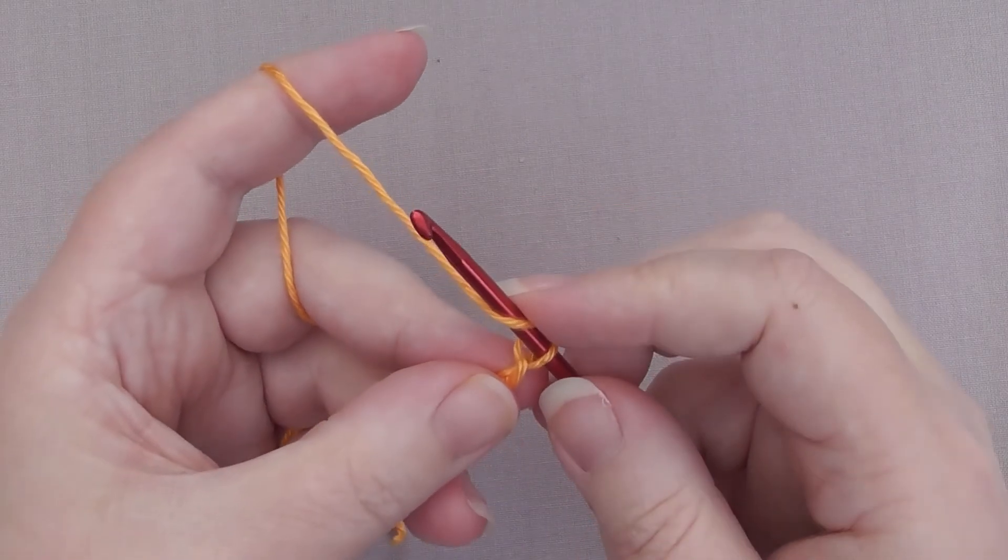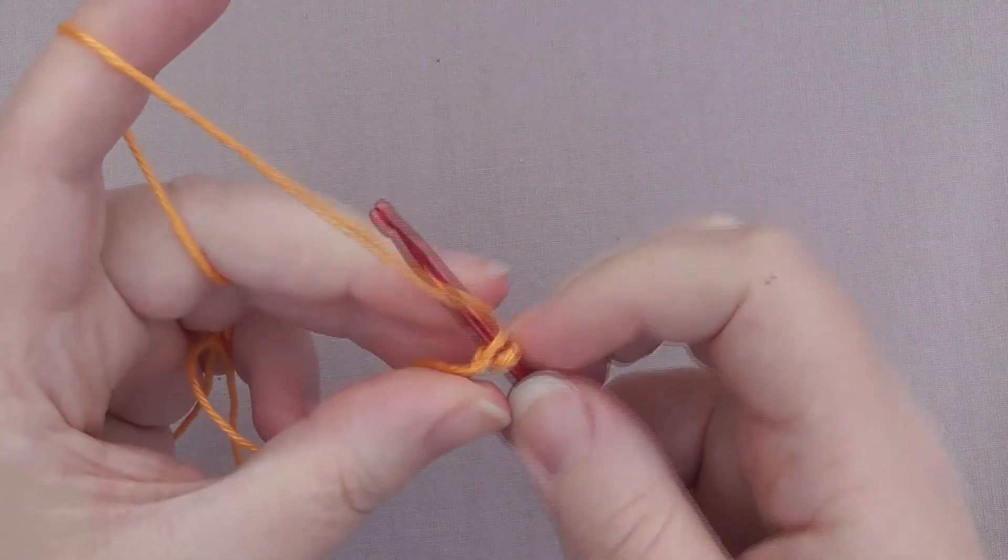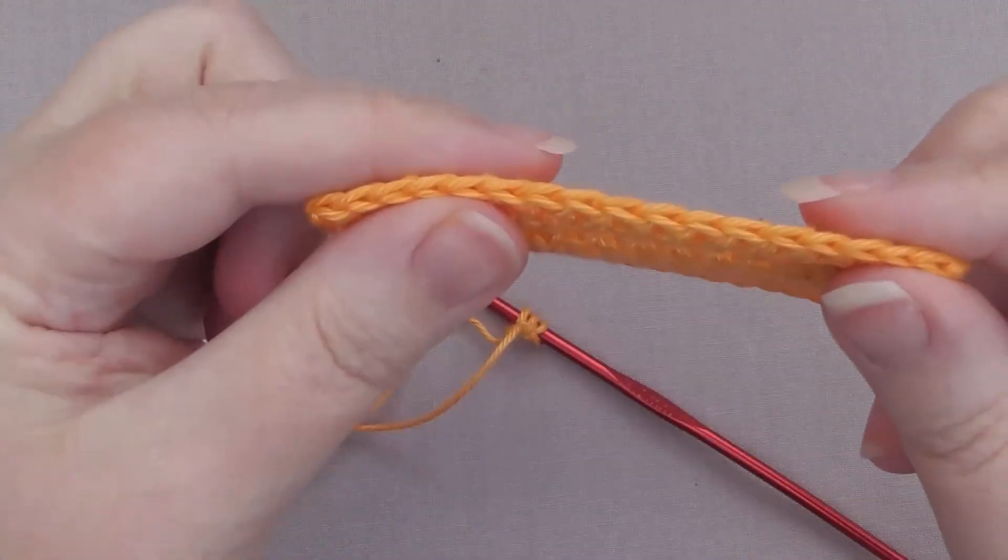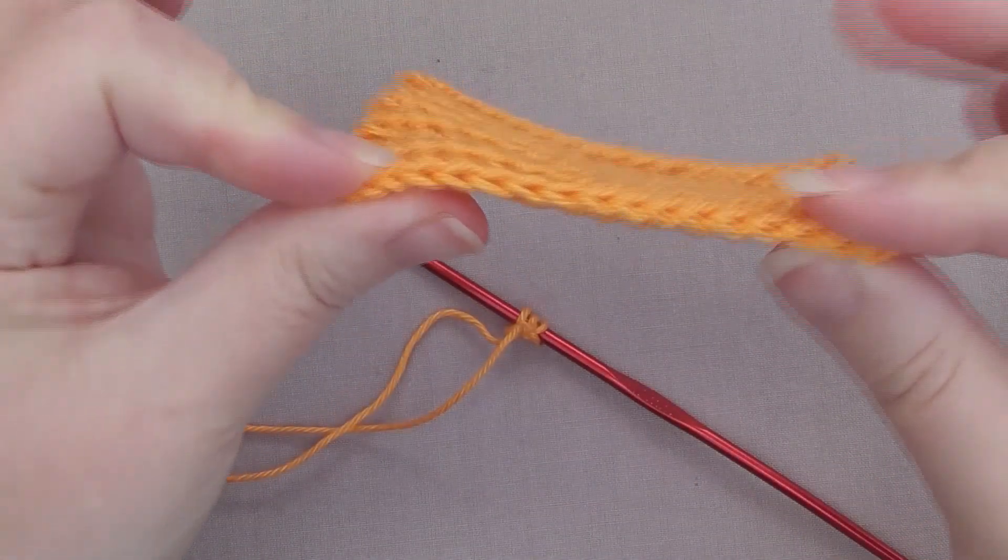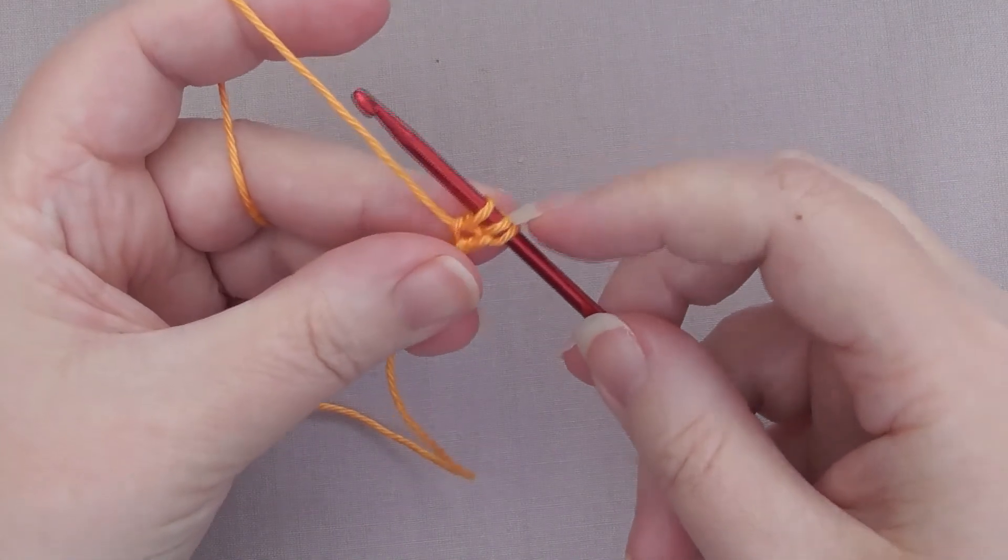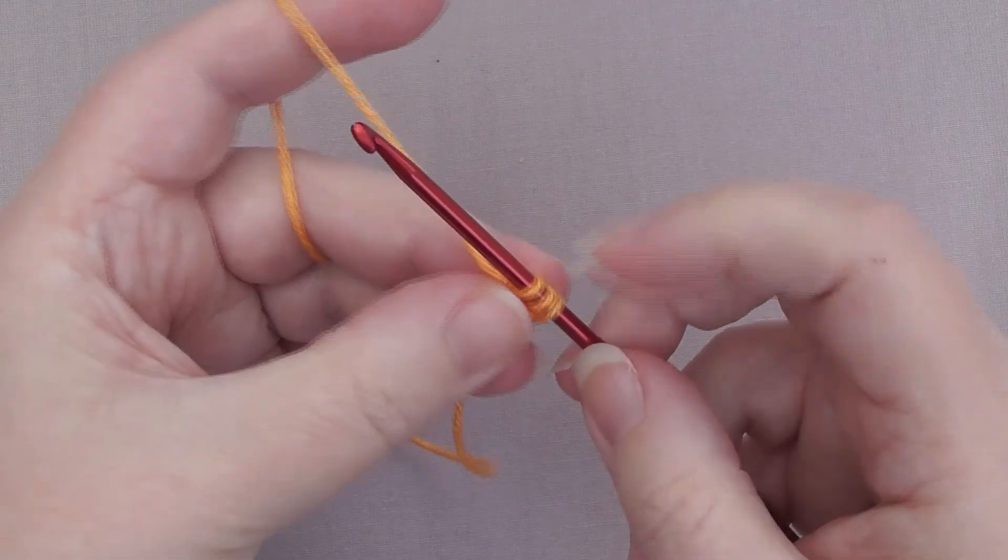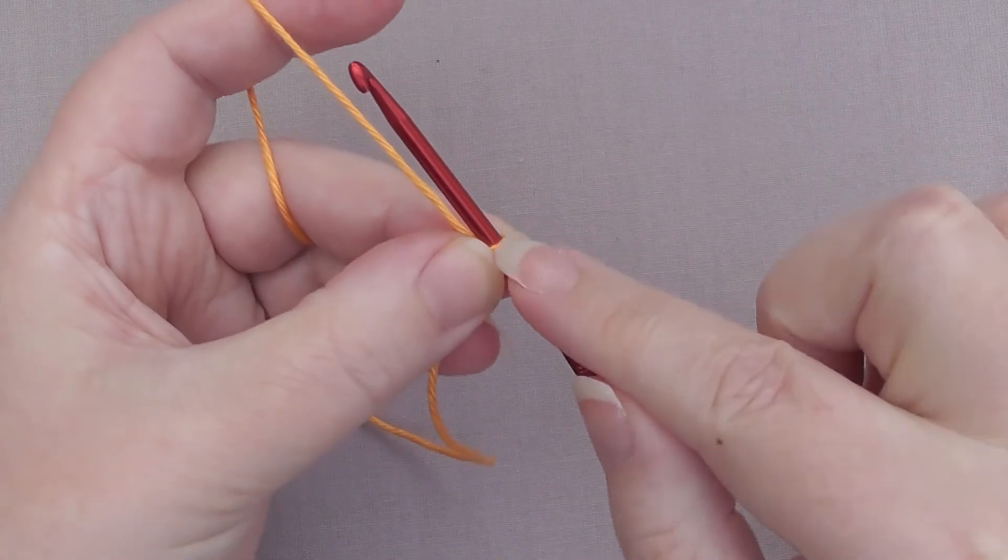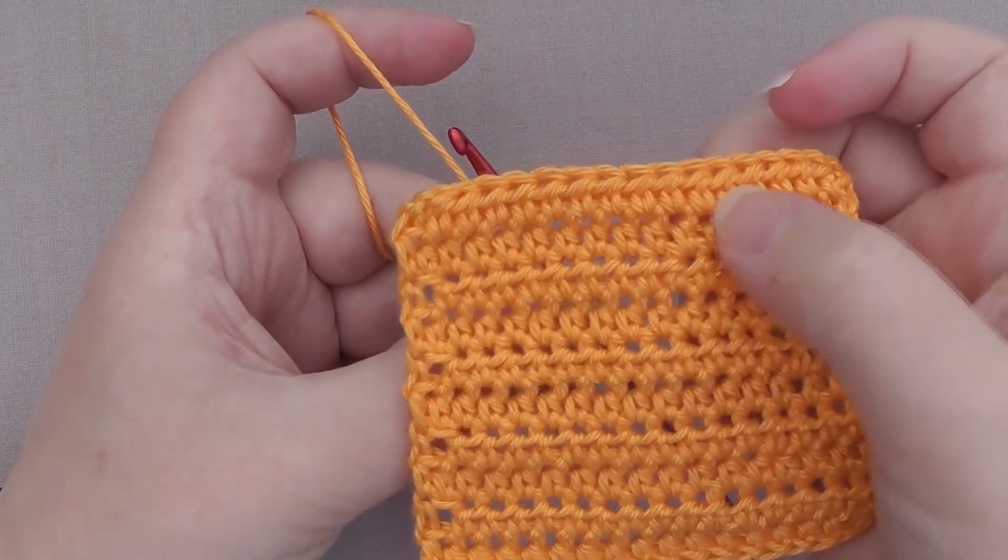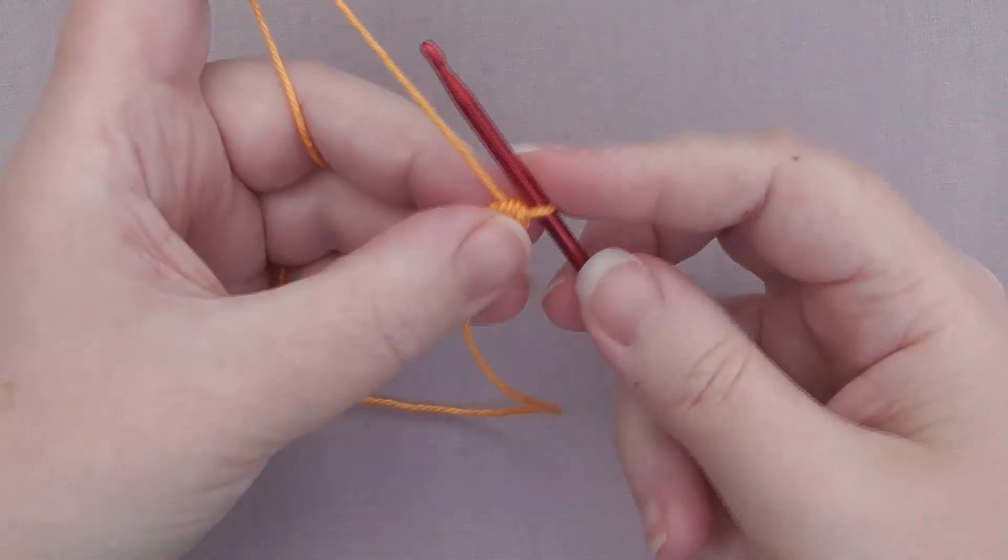So you're going to yarn over, because remember, we're doing half double crochets here. We're going to go through the back loop of that very first stitch. Once we're through the back loop, we're going to yarn over and pull through. The reason for going through the back loop is it creates this lovely, neat edge, which actually matches the top edge. So we've gone through the back loop and we've now got three loops on the hook, but we need to create the chain first. So we're going to yarn over and pull through just one of those loops. That's created a chain. And now we're going to yarn over and pull through all three of those loops, because this is the half double or half treble.